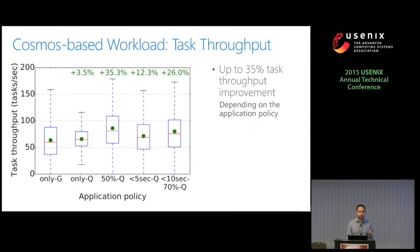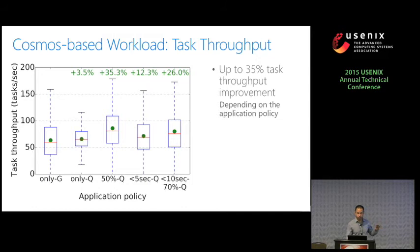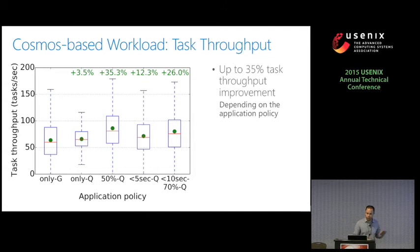We also created a workload based on the Cosmos cluster characteristics. Here we compare different application policies: Only G (stock YARN), Only Q (distributed), 50% Q (randomly give queueable containers to 50% of tasks), queueable for tasks shorter than 5 seconds, and queueable only for tasks shorter than 10 seconds in 70% of cases. Depending on the application policy used, we get gains compared to YARN ranging from 3.5% to 35.3%. So even for a mixed workload, our gains are very good.